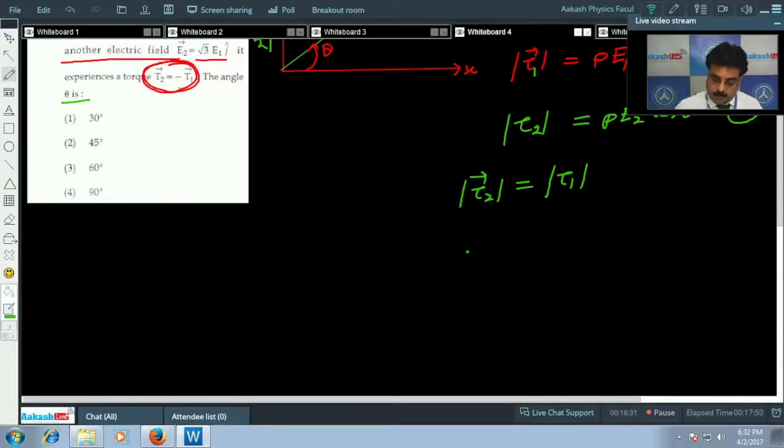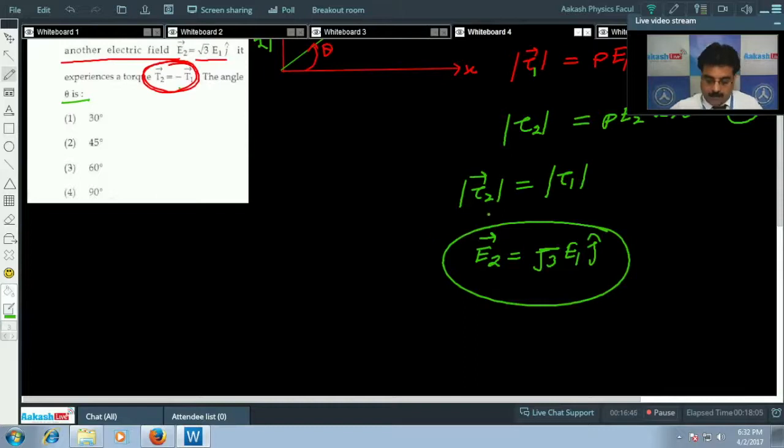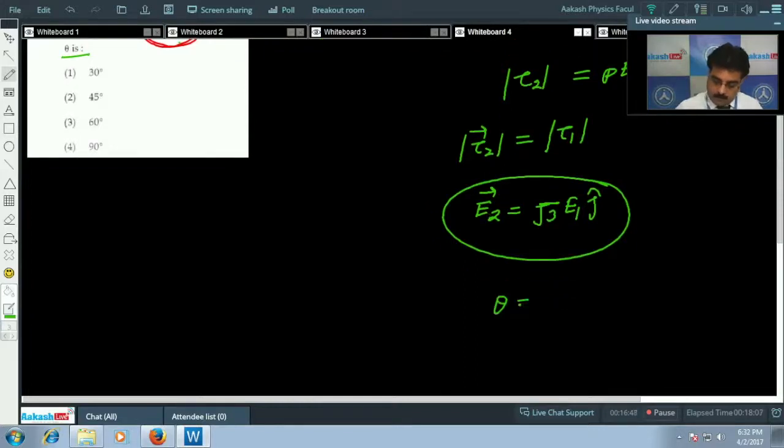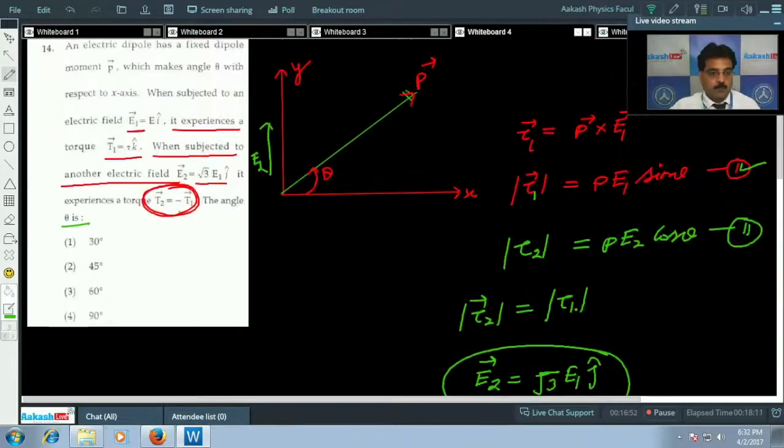During solving this question, keep in mind the question says E2 equals root of 3 times E1. So when you utilize this relation, you will get theta equals 60 degrees. Now we are going to move to question number 15.